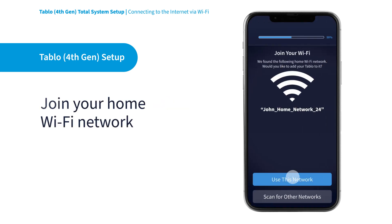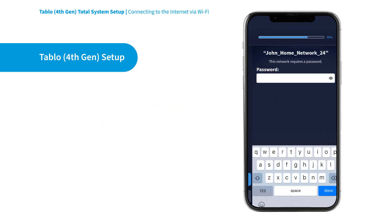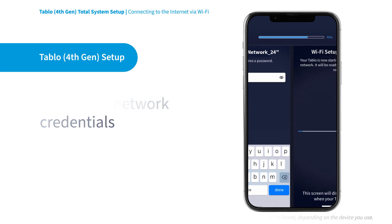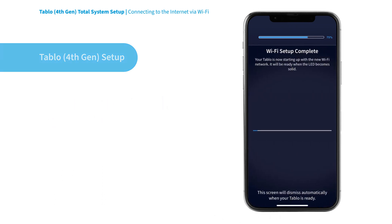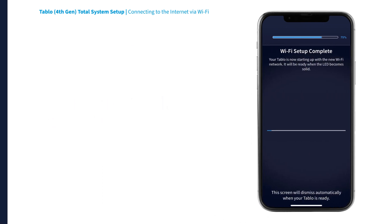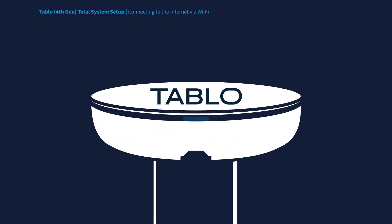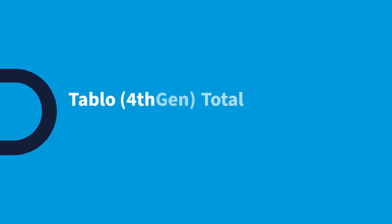Then select your home Wi-Fi network and enter your home Wi-Fi network password. Wait for the blue LED light on the Tableau device to stop pulsing and become solid. Your Tableau should now be connected to your home's Wi-Fi network.